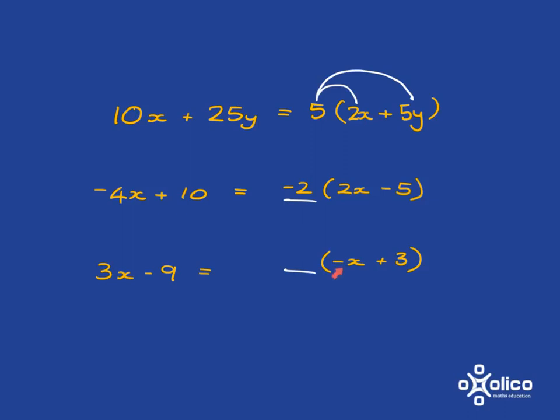And in the next one we ask ourselves what multiplied by minus x is going to give you 3x as the answer. Well there's obviously going to have to be a 3 in it, but 3 multiplied by negative x is going to give you negative 3x and we want positive 3x, so we must put a negative with it, so negative times negative is positive. So let's just check by multiplying out: negative 3 multiplied by negative x does give me 3x and negative 3 multiplied by positive 3 does give me negative 9.